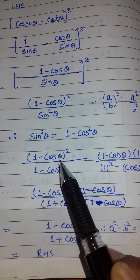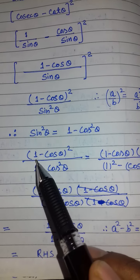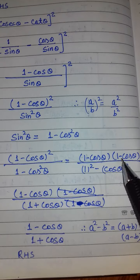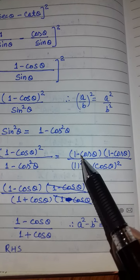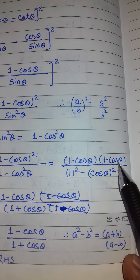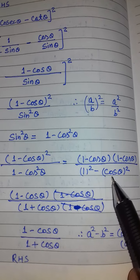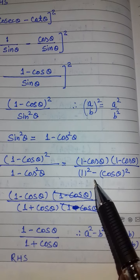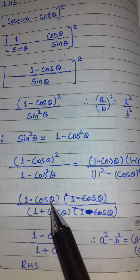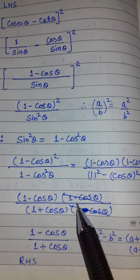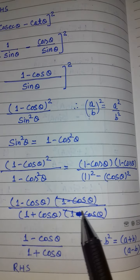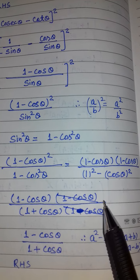(1 − cos θ)² को हम (1 − cos θ)(1 − cos θ) लिख सकते हैं, क्योंकि a − b का whole square = (a − b)(a − b)। नीचे 1 − cos² θ को a² − b² identity से (1 + cos θ)(1 − cos θ) लिख देंगे। तो 1 − cos θ से 1 − cos θ cancel हो जाएगा।